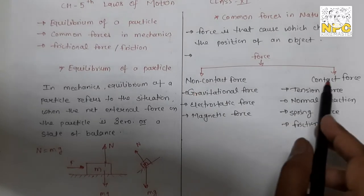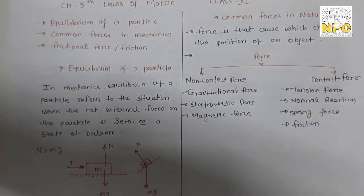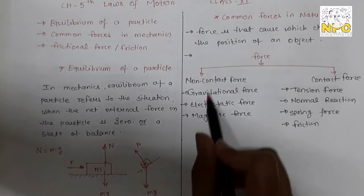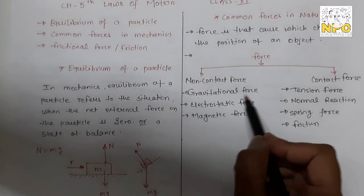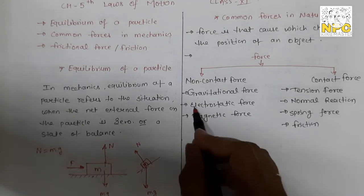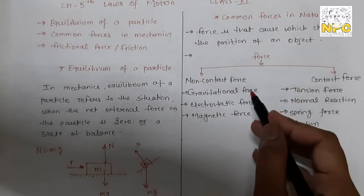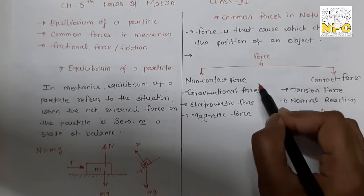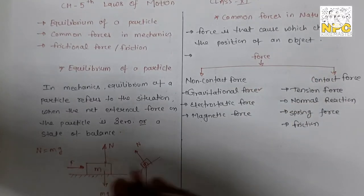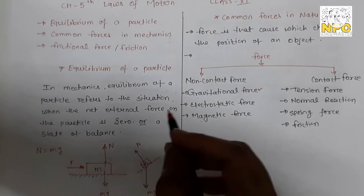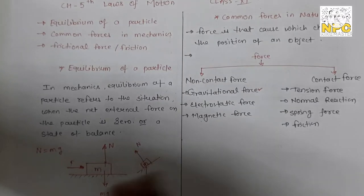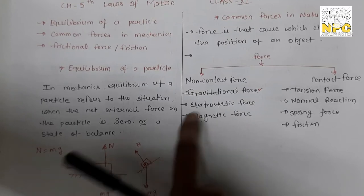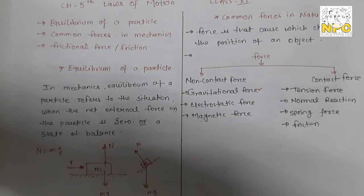In this chapter, we study forces in two categories: non-contact forces and contact forces. Non-contact forces include gravitational force, electrostatic force, and magnetic force. Electrostatic and magnetic forces will be studied in class 12, and gravitational force is covered in a separate chapter. Gravitational force is essentially mg — gravity due to the earth.